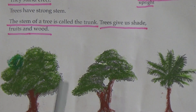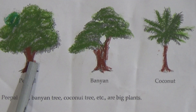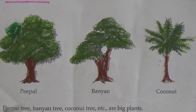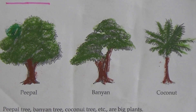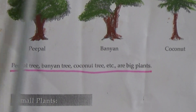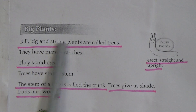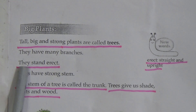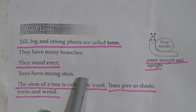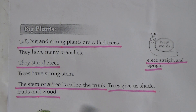See this figure — here are pictures of some trees. This is the peepal tree, this is the banyan tree, and this is the coconut tree. Peepal tree, banyan tree, and coconut tree are examples of big trees. To recap: tall, big, and strong plants are called trees. They have many branches and stand erect. The stem of a tree is called the trunk, and trees give us shade, fruits, and wood.